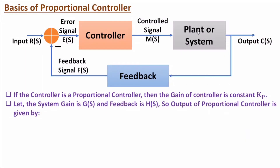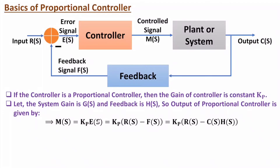Let us consider system gain G(s) and feedback gain H(s). In that situation, the output of the proportional controller M(s) will be the error signal multiplied by the gain of the controller. Here, the gain of the controller is Kp. So M(s) = E(s) × Kp. The error signal E(s) is the difference between input and feedback, so E(s) = R(s) − F(s), where the feedback signal F(s) = C(s)·H(s). So the output of the controller is Kp × [R(s) − C(s)·H(s)].